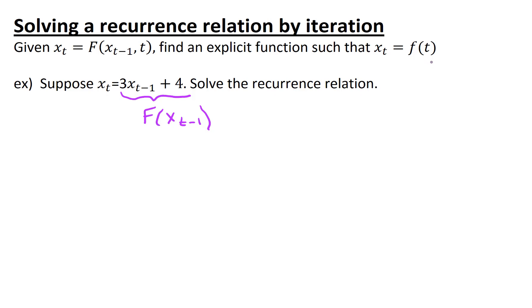And our goal is to find an explicit function. If you wanted to figure out x sub 100, you would have a lot of work to do. You'd have to figure out x sub 1, x sub 2, and keep on going, and you'd be here quite a long time, x sub 99, x sub 100. So our goal is to figure out a formula that we could just plug in time equals 100, and then that would be a very quick way of solving this problem.